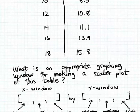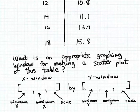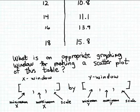A graphing window consists of two parts called the X window and the Y window. The X window is the portion of the X axis you're going to include in your rectangular coordinate system. Both the X window and the Y window consist of three values enclosed in square brackets. The first value in the X window is the minimum X value — the smallest value you'll show on the X axis. The second value is the maximum X value. The third value is the scale, which is the spacing between tick marks along the X axis.